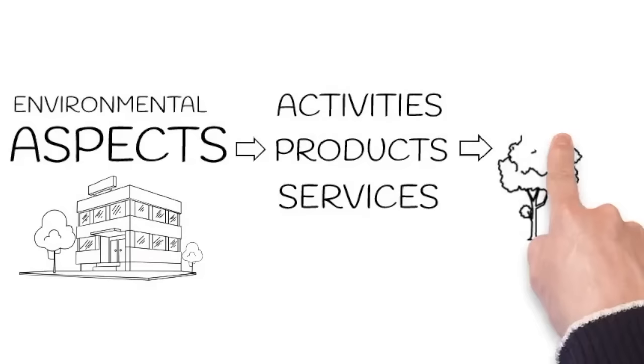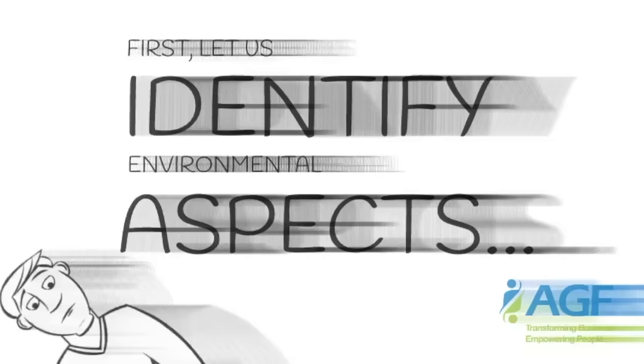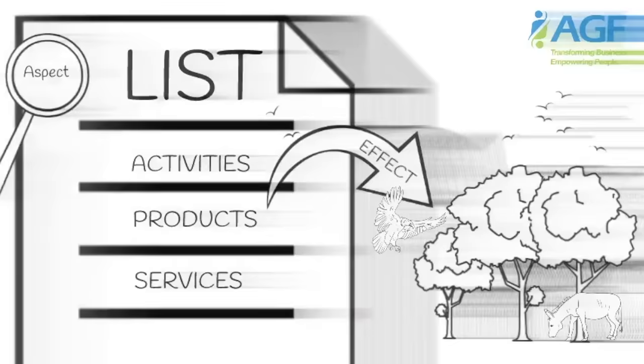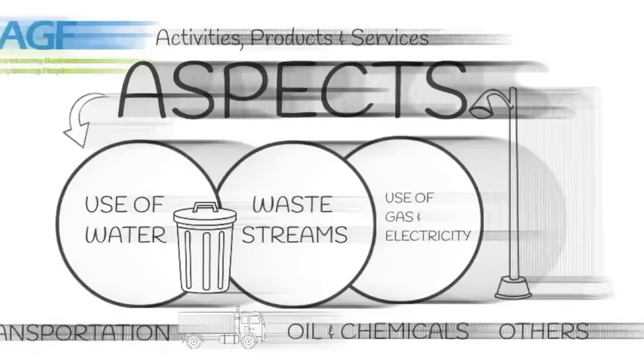An environmental aspect is any part of an organization's activities, products, or services that can interact with the environment, positively or negatively. Therefore, you should list all parts of your business in a register that have an effect — for example, waste streams, gas usage, electricity usage, water usage, transportation, oils, chemicals, and others.